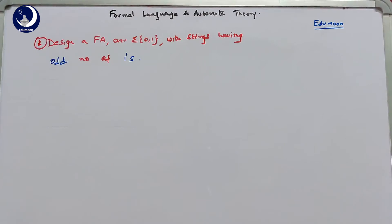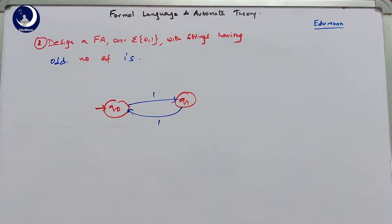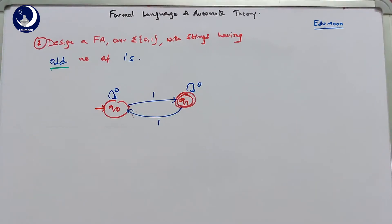The second example is designing a finite automata with sigma as {0, 1} where the strings have an odd number of ones. The previous example used even number of zeros; now we go with odd number of ones, so it is almost similar. The restriction is on 1: for even number of ones we come back to q0, for odd number of ones we go to q1. Since we need to accept strings with an odd number of ones, we make q1 the final state, and the number of zeros can be anything, so we write a self-loop on q0 and q1 for zeros.